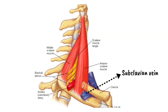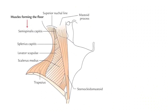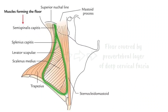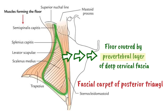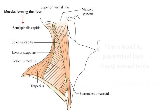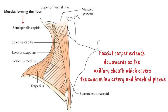The subclavian artery and the trunks of the brachial plexus pass in front of the scalenus anterior. The floor is covered by the pre-vertebral layer of deep cervical fascia, which is called the fascial carpet of the posterior triangle. This fascial carpet extends downward to become the axillary sheath, which covers the subclavian artery and brachial plexus.